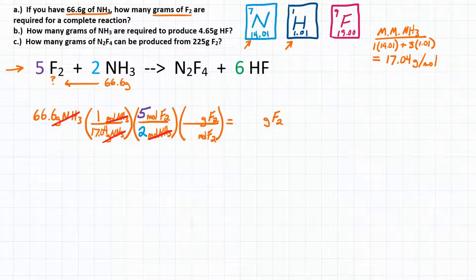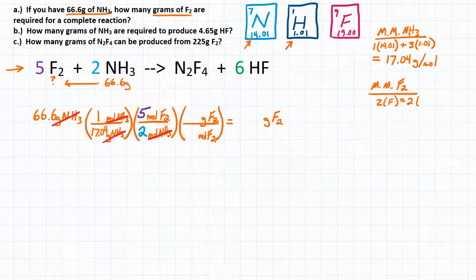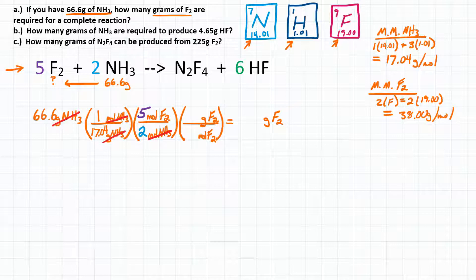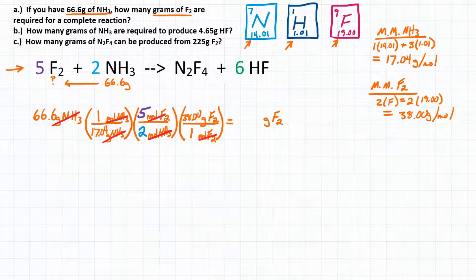We need the molar mass of F2, which is 2 times the molar mass of fluorine: 2 × 19.00 grams per mole = 38.00 grams per mole. We use that in our third conversion factor with 1 mole on the bottom and 38.00 grams on top. Moles of F2 cancel and we're left with exactly what we want: grams of F2.